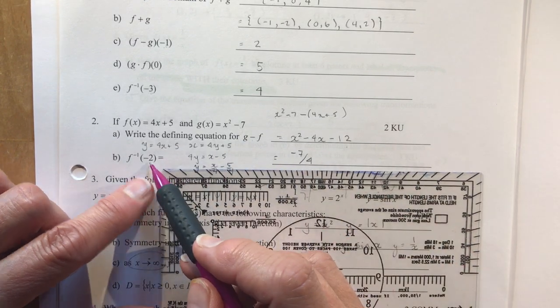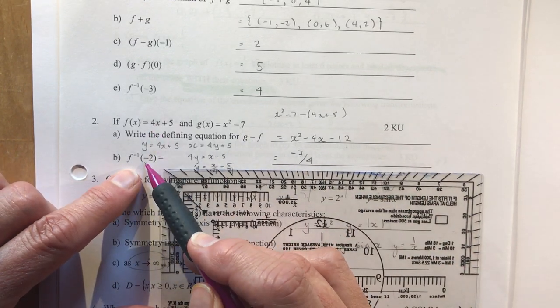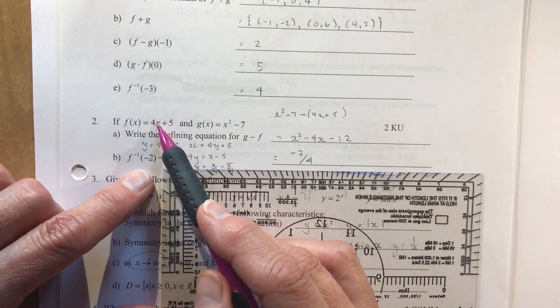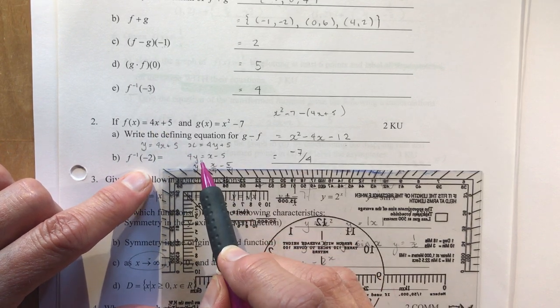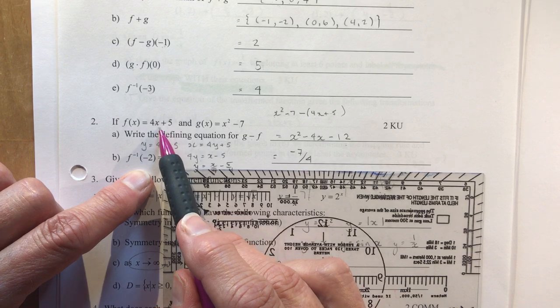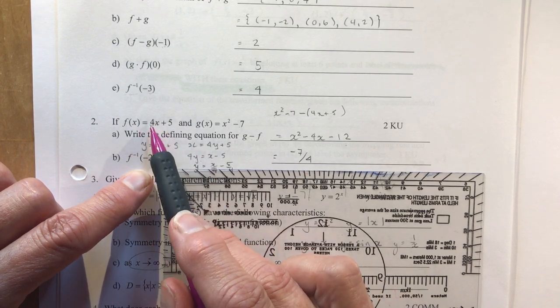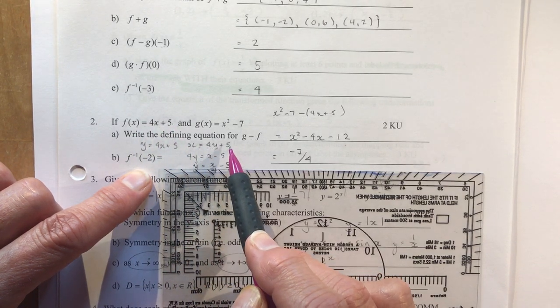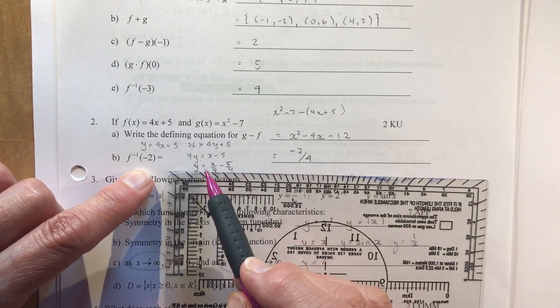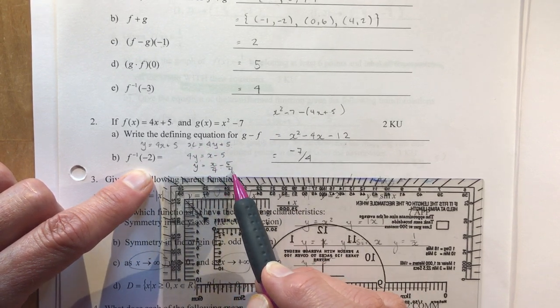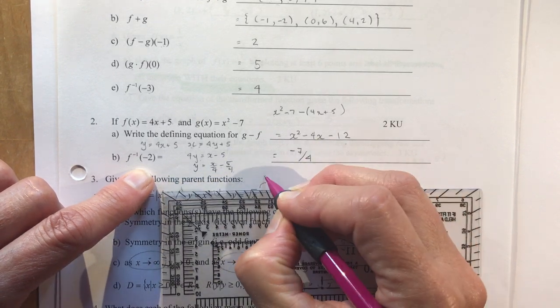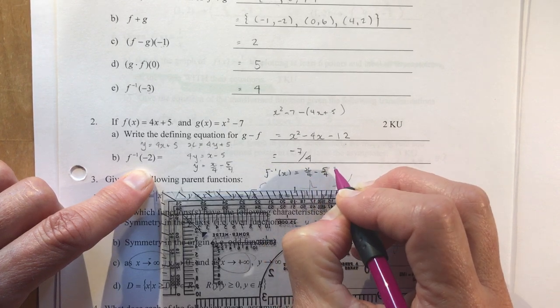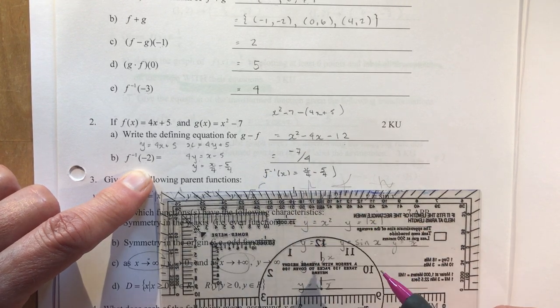So that means I have x squared minus seven minus four x plus five. Now remember minus a minus. So x squared minus four x minus minus minus twelve. Okay, what's the inverse of the function f when x is minus two? So in order to do that, I don't know what the inverse is, so I have to evaluate that. So see here I said I changed the coordinates. So if x is equal to four x plus five, or sorry, y equals four x plus five, then x is equal to four y plus five. So four y equals x minus five, divide by four, you get x over four minus five over four. So that would be your inverse. So f minus one x equals x over four minus five over four, and it wants to know what is that equal to when x is minus two, and I get minus seven quarters.